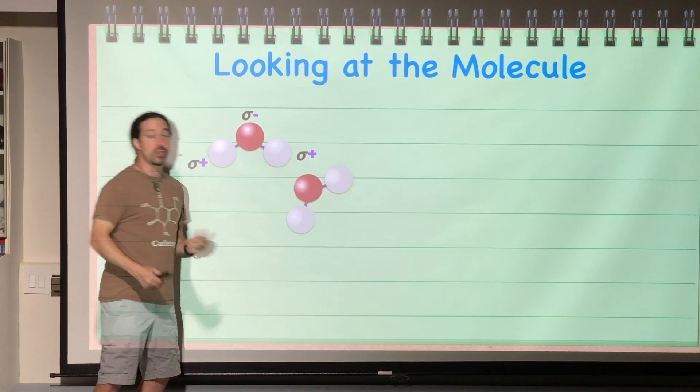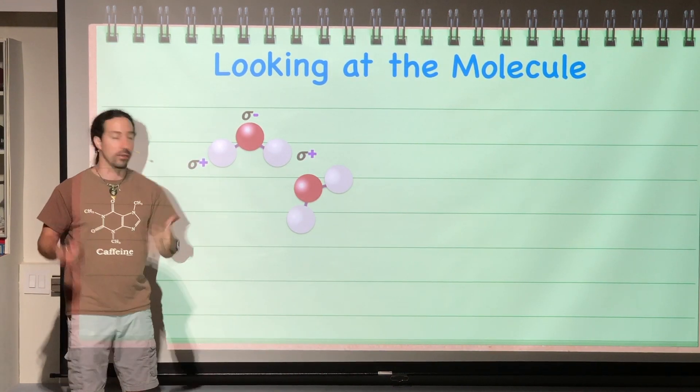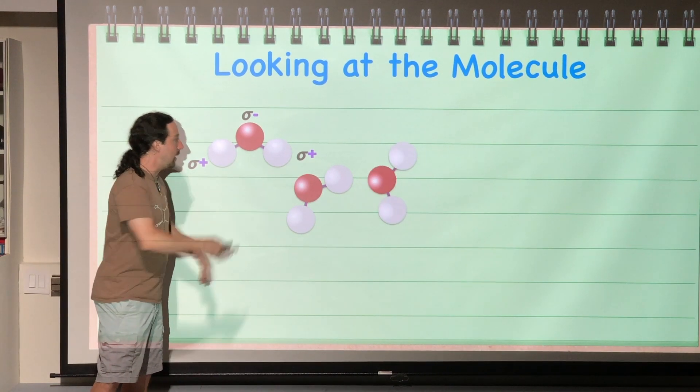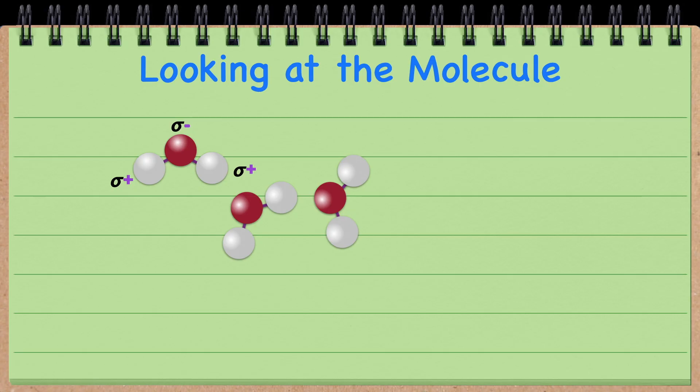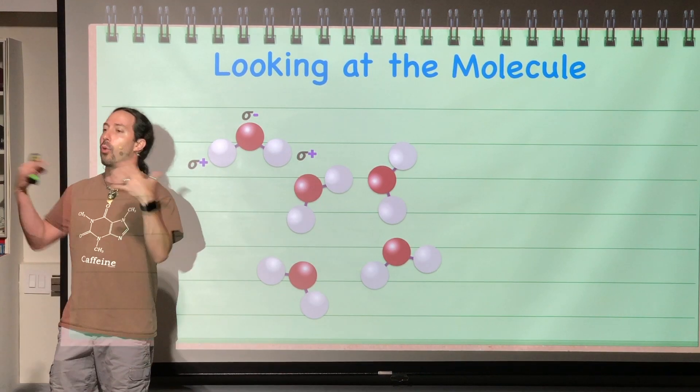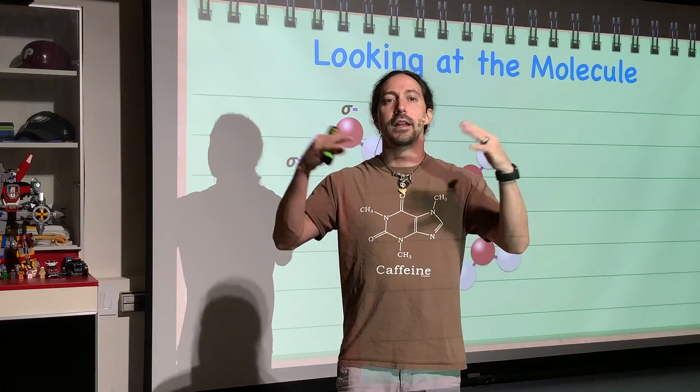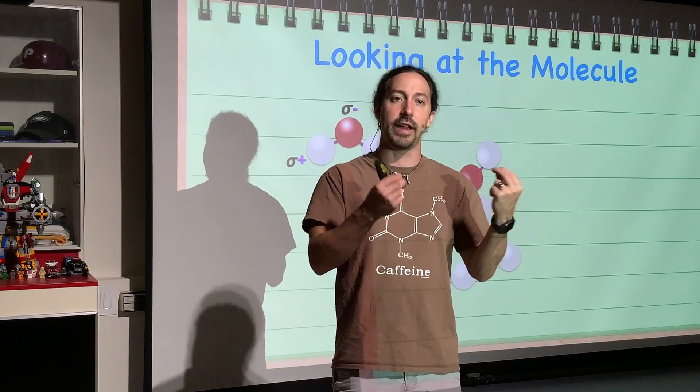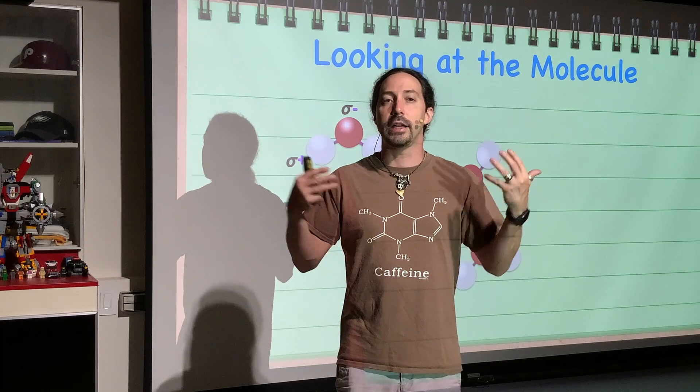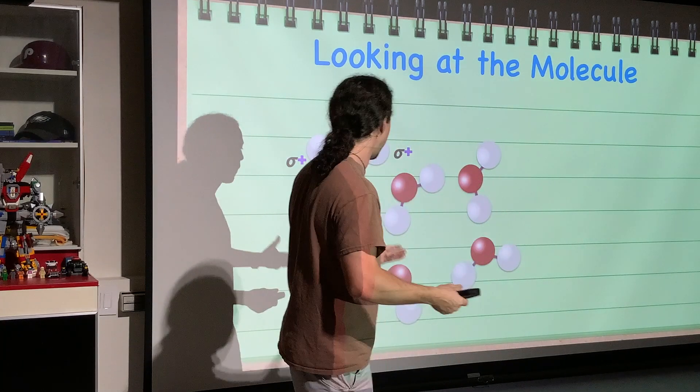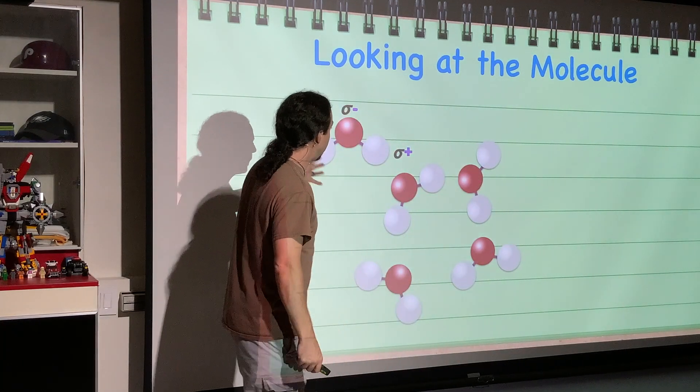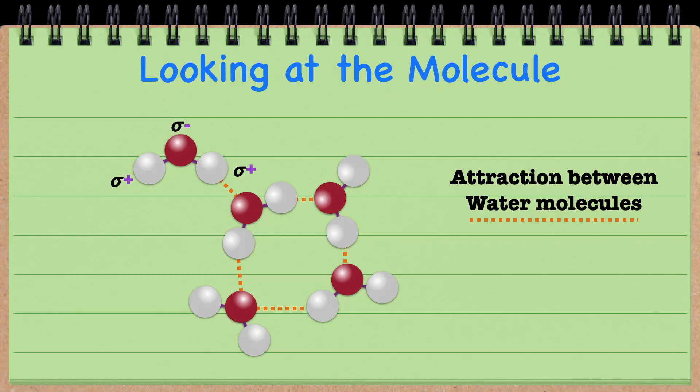So these opposites are going to want to face toward each other. If we were to bring another one in, again, the slightly negative oxygen orienting toward the slightly positive hydrogen. That will happen again and again and again. As we add more and more water molecules, they're going to continue to orient themselves in such a way that the slightly positive ends and the slightly negative ends are going to face toward each other. So that way, opposites can attract and the likes would be repulsed by each other. And that means we can show that there's some attraction between these water molecules. There's a force that's holding them sort of together.